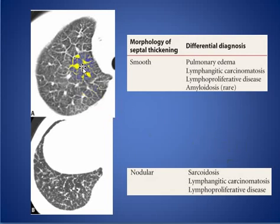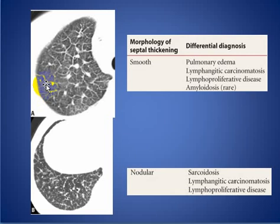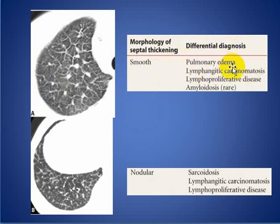If the interlobular septal thickening is smooth — as in this case, where we see thickening of the interlobular septum with the central pulmonary arteriole represented as a dot — there are two main causes: the first and most common cause is pulmonary edema, and the second most common cause is lymphangitis carcinomatosis.